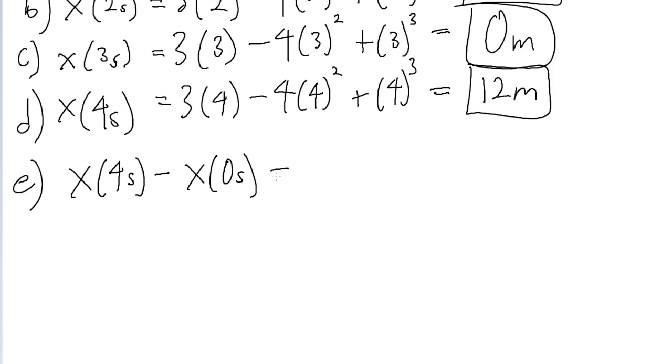As we found from the previous parts, x at 4 seconds is 12 meters and x at 0 seconds is 0 meters. So 12 minus 0 is just 12. Our displacement between those two points is 12 meters.